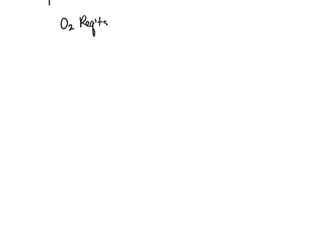So how do we determine oxygen requirements in the laboratory? One way is by using a thioglycolate tube. A thioglycolate tube has a broth — sometimes with a little agar — in a test tube. It can be autoclaved to sterilize it and remove all oxygen from the medium. Another way to remove oxygen is by boiling it for 15 to 20 minutes. Then the thioglycolate tube can be inoculated with an organism.